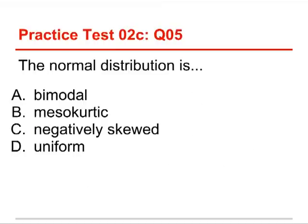Number 5. The normal distribution is...and then you can choose bimodal, mesocurtic, negatively skewed, or uniform. Well, as we saw just a second ago, the normal distribution is, in fact, mesocurtic. It has a middle bulge. It's the moderate level between the tall and pointier, and the flat one.